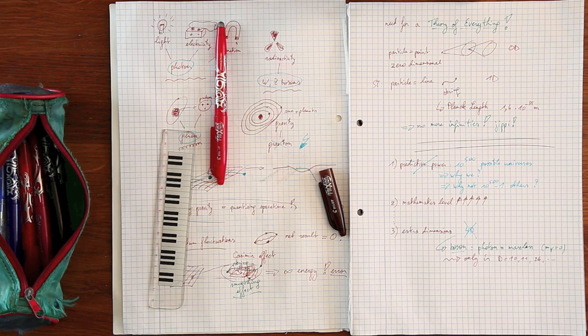If string theory is right, we have more than 4 dimensions in your universe. Point. But where do they go? We only see 3 spatial and 1 time dimension.